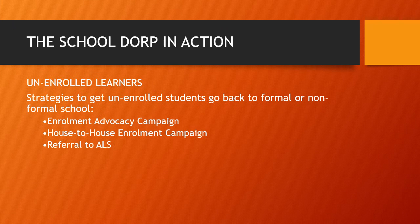What is the school DORP action for unenrolled learners? There are three strategies to get unenrolled students to go back to formal or non-formal school: number one, enrollment advocacy campaign; number two, house-to-house enrollment campaign; and lastly, referral to the alternative learning system.